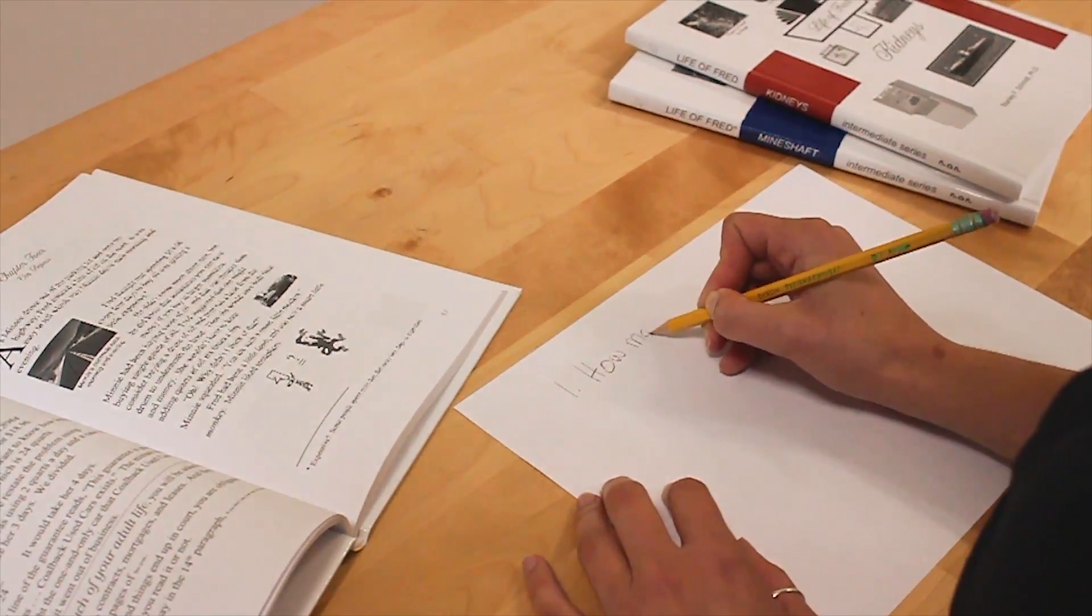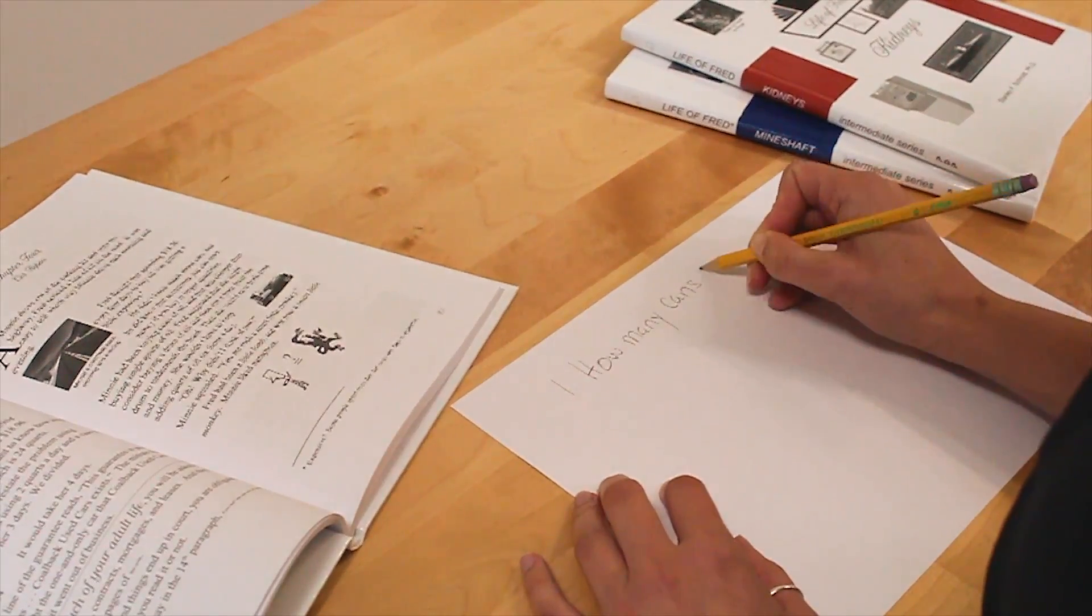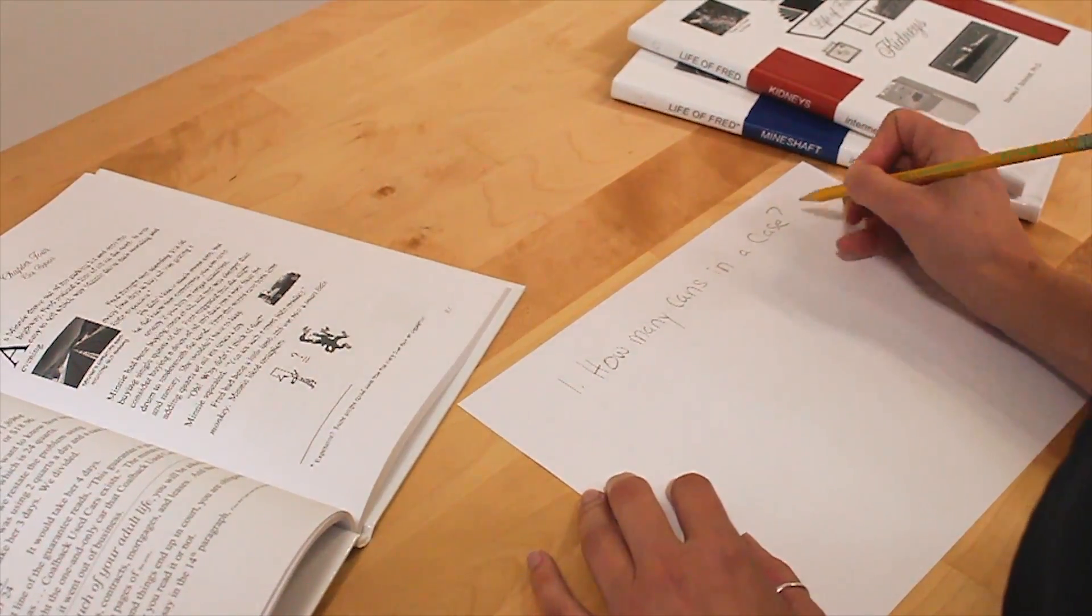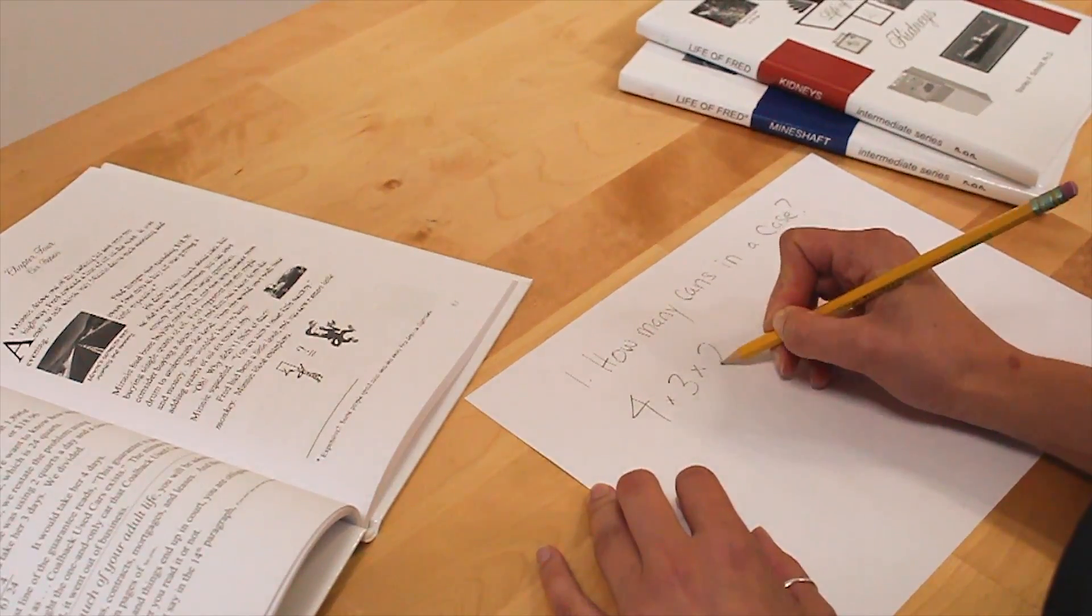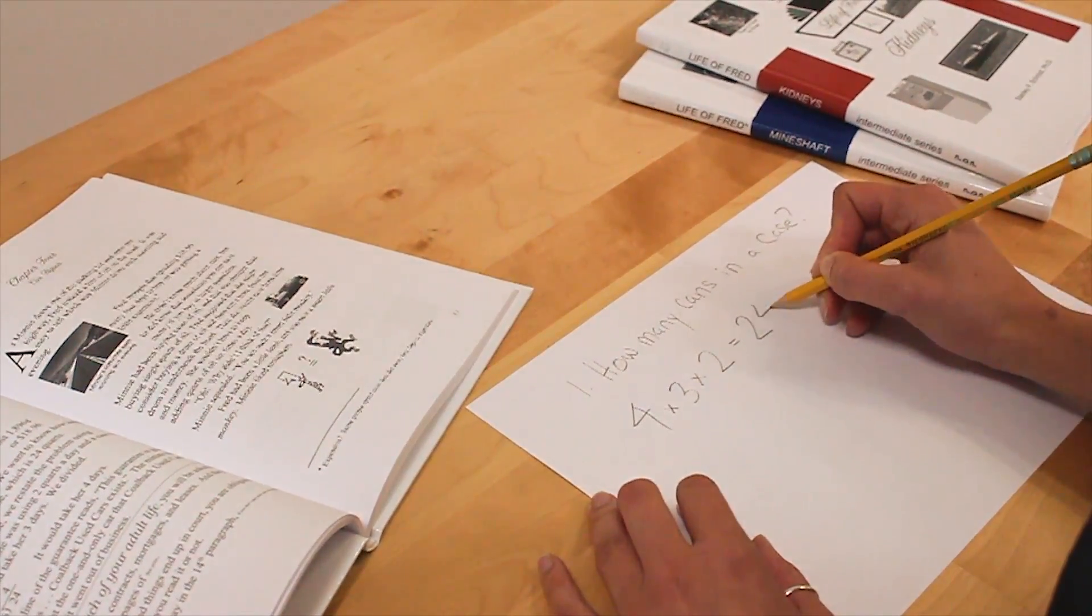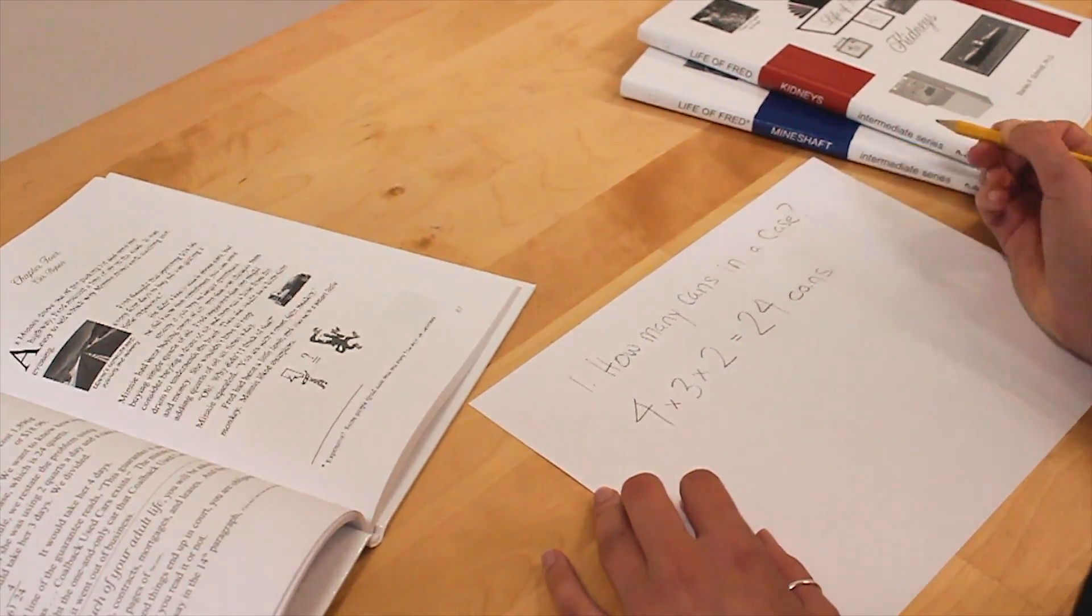A case of oily oil is a box of four cans wide, three cans deep, and two cans tall. How many cans are in a case of oily oil? We multiply four by three by two, which gives us 24 cans.